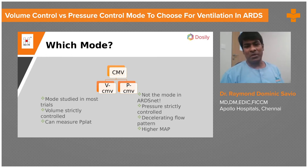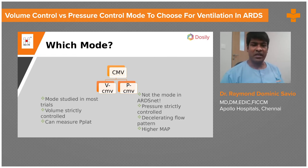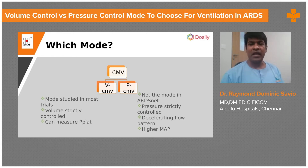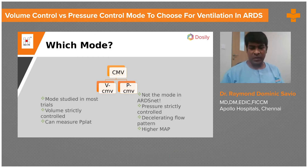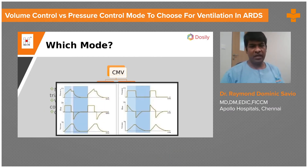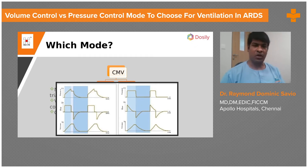Some people prefer volume control, and for pressure control one commonly cited advantage used to be the decelerating flow pattern — but nowadays new generation machines have decelerating flow even in volume control, so that argument is less valid. A more important reason is higher mean airway pressure, which is a driving force for oxygenation. Let me show you with a graph. Anything plotted against time is called a scalar: pressure vs. time is a pressure scalar, flow vs. time is a flow scalar, volume vs. time is a volume scalar.